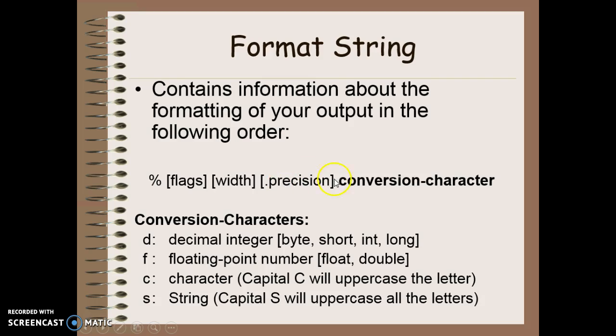The last piece here is the conversion character. This tells me what type of data it is that I'm trying to output, and this is required. So if I put a D it means I'm using an integer type: byte, short, int, or long. An F means it's a floating point number, a float or double. A C means it's a character and if I use a capital C here it will convert my character to uppercase. And then S is a string and again if I use a capital S it will be entirely converted into uppercase.